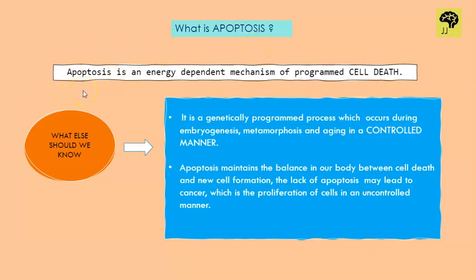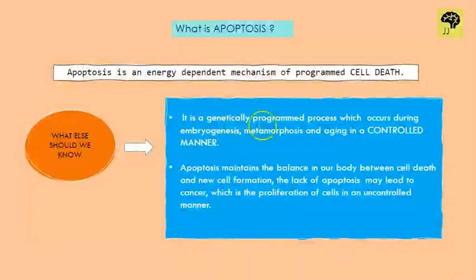So what is apoptosis? Apoptosis is a process at the end of which cell death occurs. Apoptosis is an energy-dependent mechanism of programmed cell death. It is energy-dependent, meaning it needs energy in the form of ATP. It is also programmed — meaning it is already incorporated within us, encoded in our genes, just like a mobile phone is programmed to work in a particular manner. So apoptosis is a genetically programmed process.